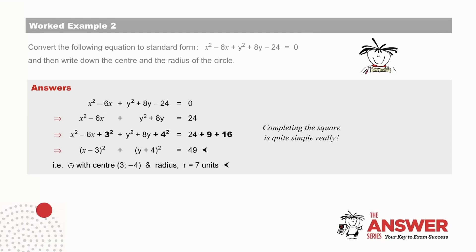And we arrive at the standard form of the equation of the circle, from which we can derive the centre (3, -4), and the radius, the square root of 49, equal to 7 units. Completing the square is quite simple, really.